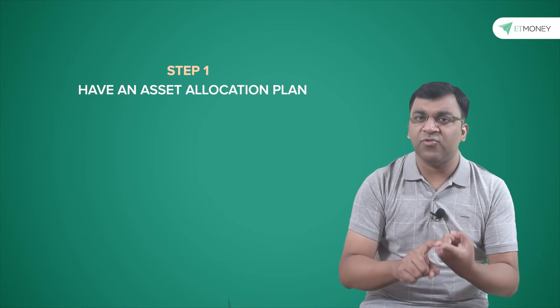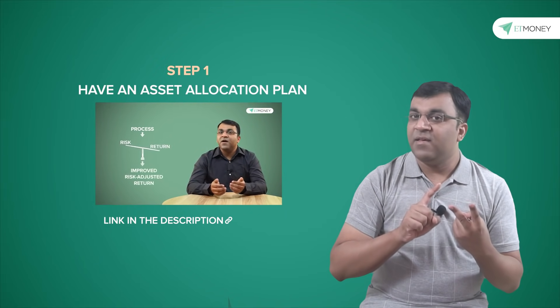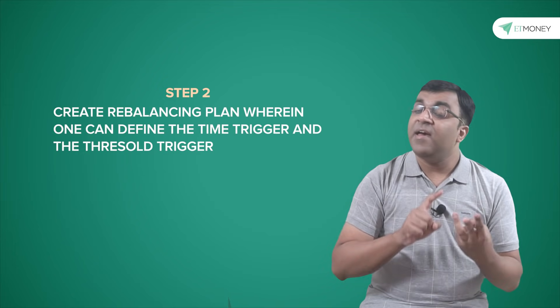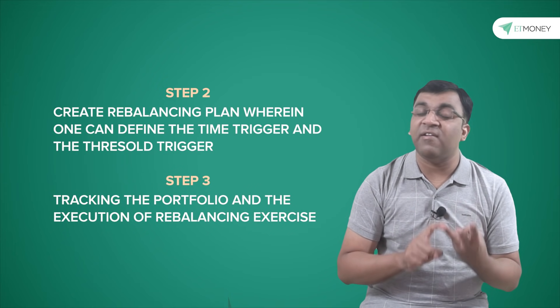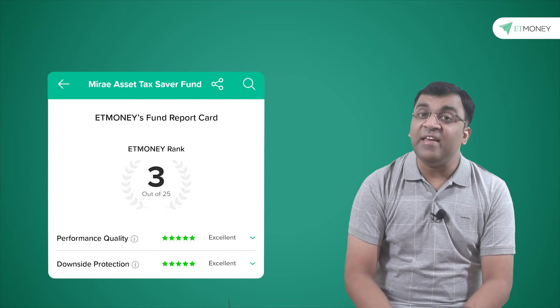It would be in my interest to do a rebalancing right away. Let's quickly summarize the steps that need to be taken. Step one is to have an asset allocation plan — the best resource you can find for this is the asset allocation video on the ET Money YouTube channel. Step two is to create a rebalancing plan, wherein you can define the time trigger and the threshold trigger. And step three is the actual tracking of your portfolio and the execution of a rebalancing exercise. As part of execution, you will need to know which funds you would like to retain and which ones you would want to redeem.